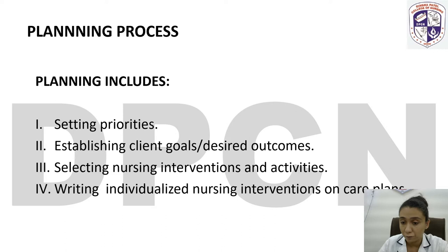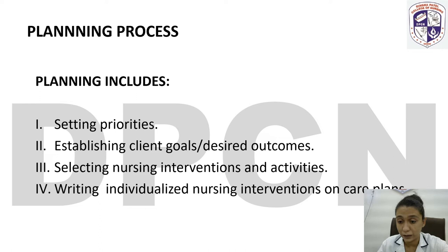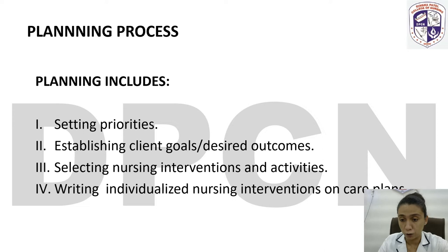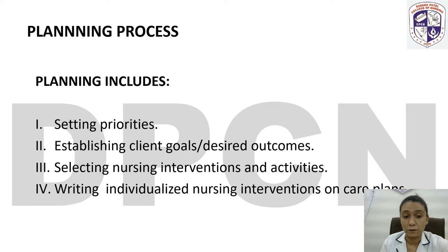Second step: establishing client's goal and desired outcome. After setting priorities, we establish goals. For example, if a patient has fever, our goal is to reduce the fever. Then we select nursing interventions — we can give cold application or cold sponge. We can also give antipyretic medication — that is a nursing intervention. So we select what to choose: cold sponge or antipyretic medication.